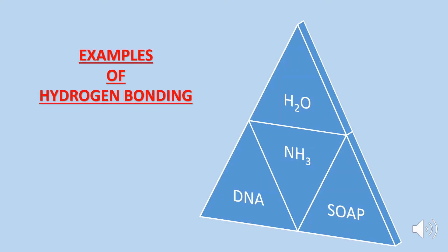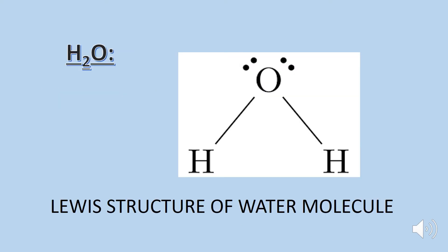To understand the concept of hydrogen bonding properly, we will discuss examples of hydrogen bonding. These include water, ammonia, DNA, and so on. One of the best examples of hydrogen bonding is in the water molecule.